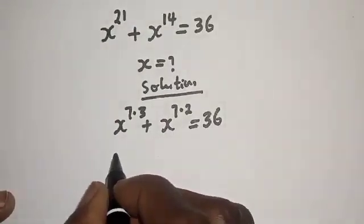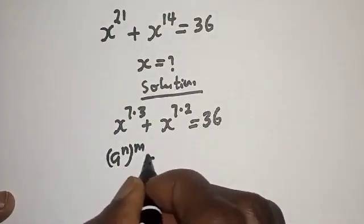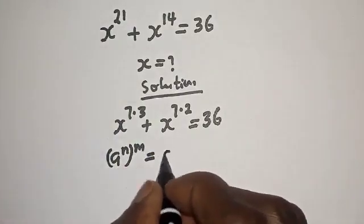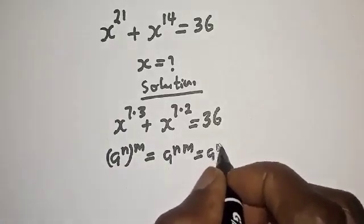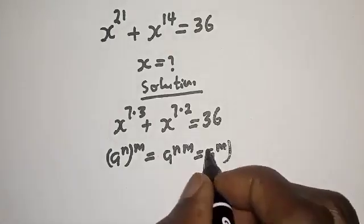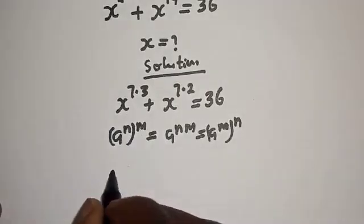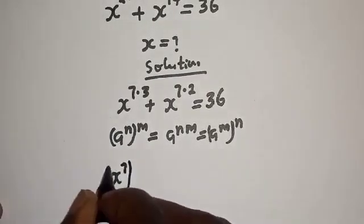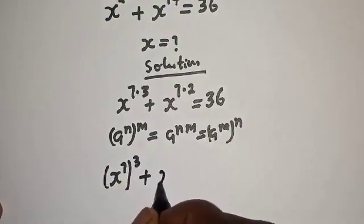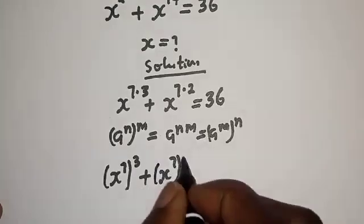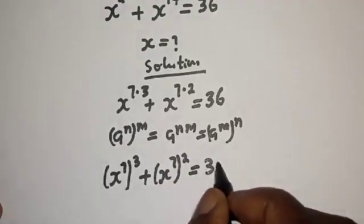Take note of this exponential rule: if you have a raised to power n, to the power of m, this is equal to a raised to power nm, which is also equal to a raised to power m to the power of n. And this can be written as x raised to power 7, to the power of 3, plus x raised to power 7, squared, is equal to 36.